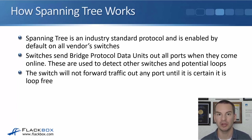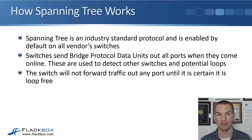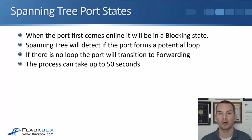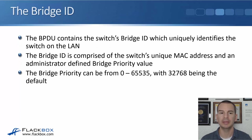Switches send BPDUs — Bridge Protocol Data Units — when they come online, and the BPDUs are used to detect other switches and potential loops. The switch will not forward traffic out any port until it's certain that port is loop free. When a port first comes online it will be in a blocking state, because the switch needs to make sure there's not a loop. Spanning tree will detect if the port forms a potential loop, and if there's no loop the port will transition to a forwarding state. That process can take up to 50 seconds with traditional legacy spanning tree.